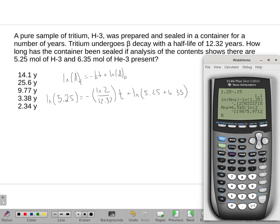Okay, let's see what this gives us. So I'm going to start over here, 5.25. Got to know how to do your calculator. Natural log of 5.25 minus the natural log of 5.25 plus 6.35. Close those parentheses. Then I will multiply by 12.32 and divide by the natural log of 2.